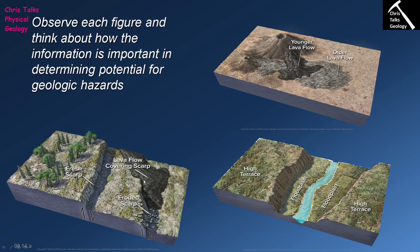This lava flow is going to help us date when this fault scarp was last active, because clearly the fault moved creating the fault scarp, and then after that the lava flow came in. So we can use the lava flow to work out the last possible time this fault could have moved. If we can see that this fault tends to move once every million years and it's been three million years since it last moved, there's a good chance the fault could move and there could be an earthquake.